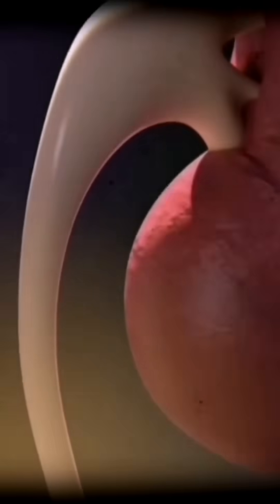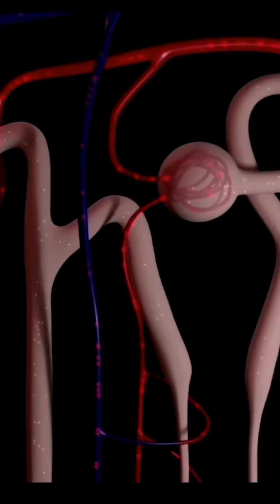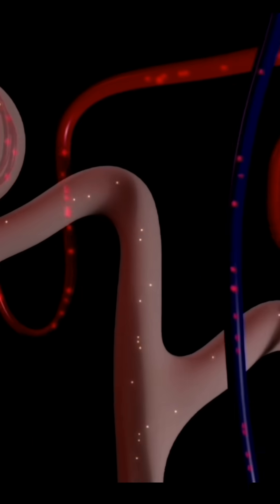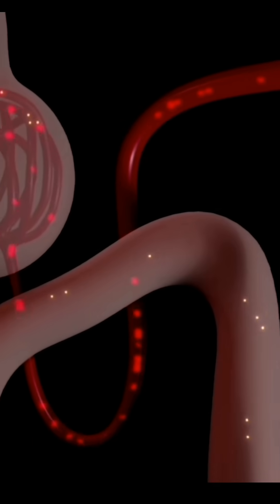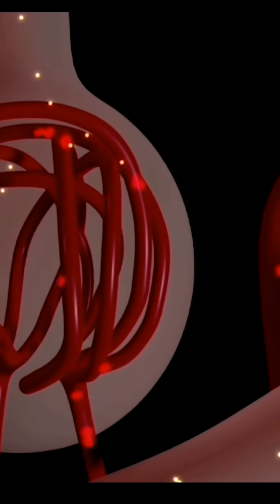The kidneys contain microscopic structures called nephrons, which are responsible for filtering the blood. Each kidney has around 1 million nephrons. These nephrons remove excess water and waste materials such as urea from the blood, ultimately creating urine.